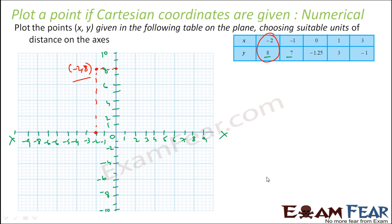Let's draw the second point: minus 1 comma 7. x is minus 1 — this point; y is 7 — this point. If we draw these perpendicular lines, they will meet somewhere here. This point is minus 1 comma 7.